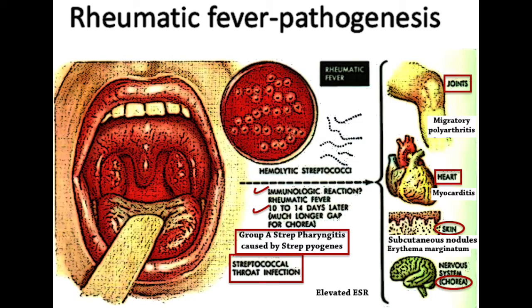Rheumatic fever is an immunologically mediated inflammatory disease that typically develops two to three weeks after an episode of Group A strep pharyngitis, caused by Streptococcus pyogenes bacteria.